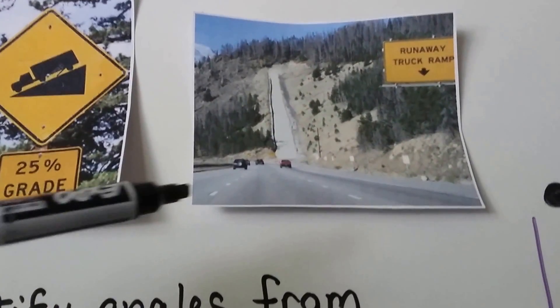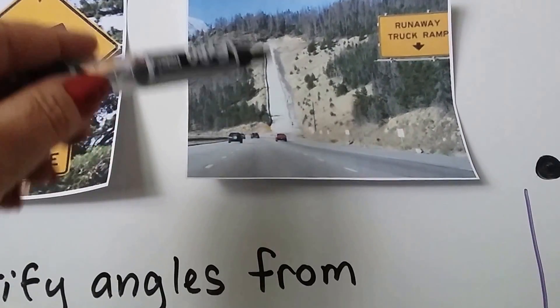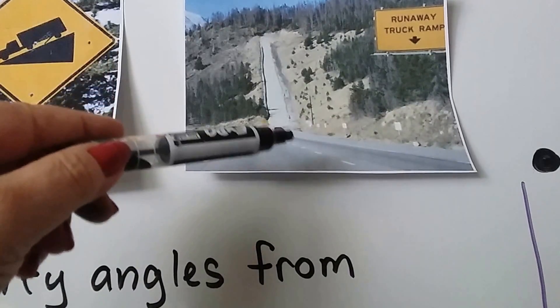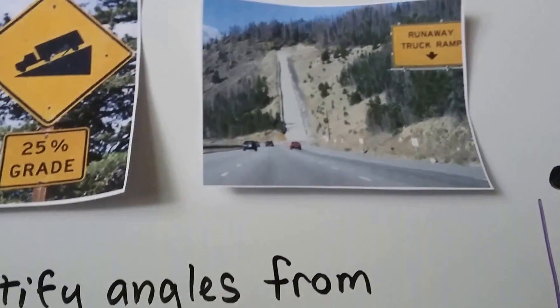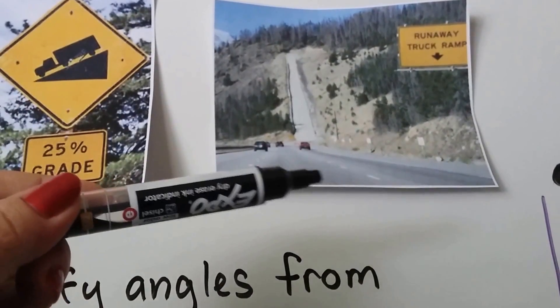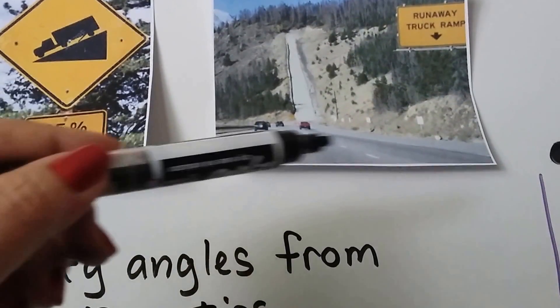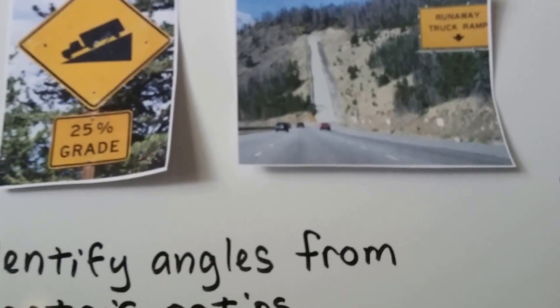You'll sometimes see along a highway a little gravel or dirt road that goes uphill for a short distance when you're coming down a hill. That's a runaway truck ramp. So if the truck loses control going down a steep grade, he can go up that runaway truck ramp, and going upwards will help him stop.